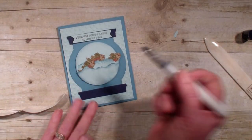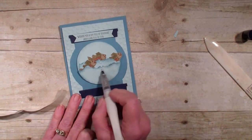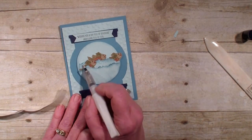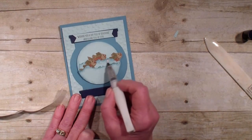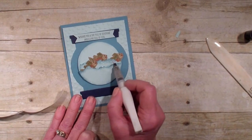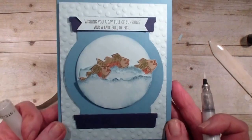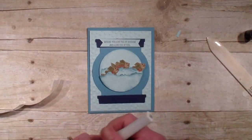I'm going to bring in that Wink of Stella. I've already added the Wink of Stella to the fish, but I'm just going to add it to the waves just to give it some sparkle. And there you have it. Hope you've enjoyed today's card. Talk to you real soon.